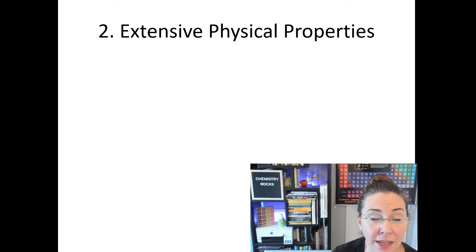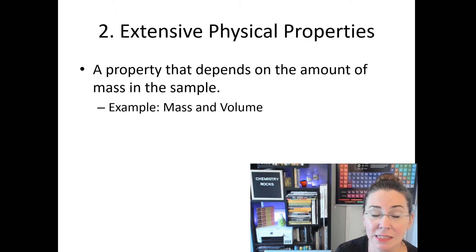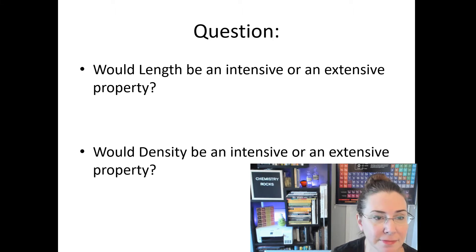Extensive physical properties, on the other hand, have to do with the amount of matter in your sample. So if we are talking about matter, what is the definition we've had that relates back to the amount of matter in a sample? That would be mass. This is a property that depends on the amount of mass in your sample. For example, mass is an extensive physical property, so is volume. So would length be an intensive or an extensive property? Length would be an extensive property. It depends on the amount of matter in your sample.